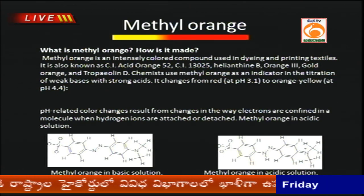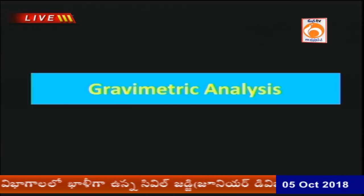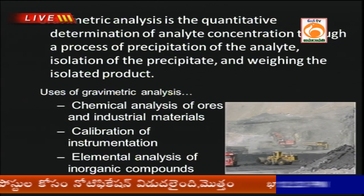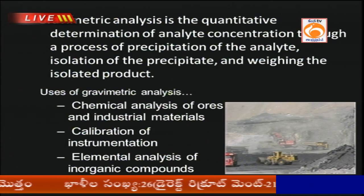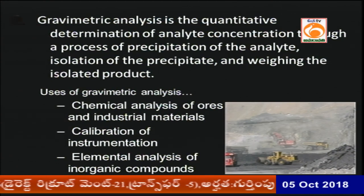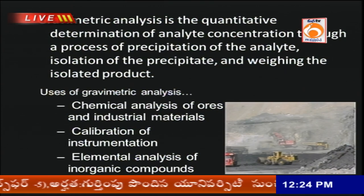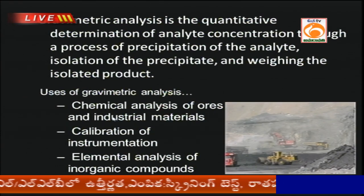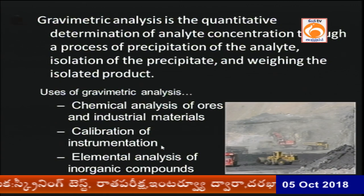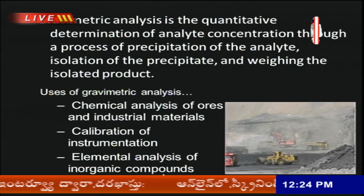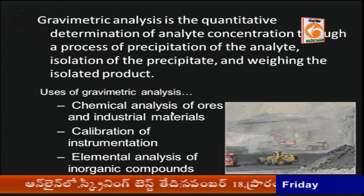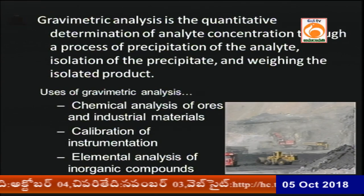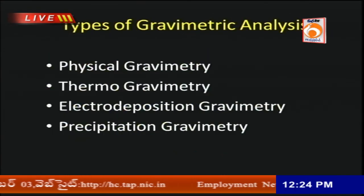Now let us take up the second part of quantitative analysis: gravimetric analysis. Volumetric analysis identifies the volume of a substance, whereas gravimetric analysis identifies the exact weight of that particular substance in the sample. Gravimetric analysis finds use in the analysis of ores, industrial materials, calibration of instrumentation, and elemental analysis of inorganic compounds. It is more accurate and gives the exact quantity of weight very easily.